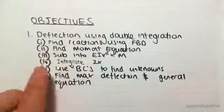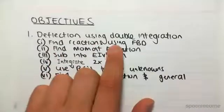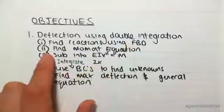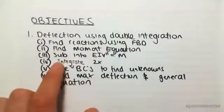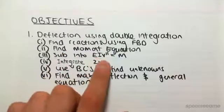The process is very simple. All you want to do is find the reactions using a free body diagram of your system. We're then going to find the moment equation, and then substitute the moment equation into this formula here.